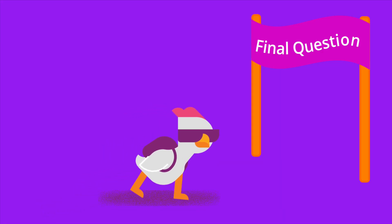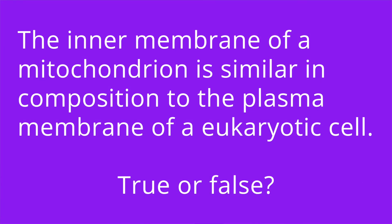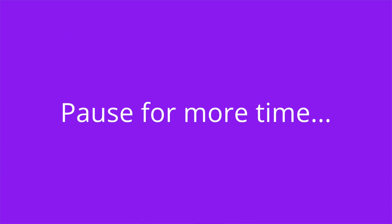Question number three: the inner membrane of a mitochondrion is similar in composition to the plasma membrane of a eukaryotic cell — true or false? The answer is false. It is similar in composition to the plasma membrane of a prokaryotic cell.